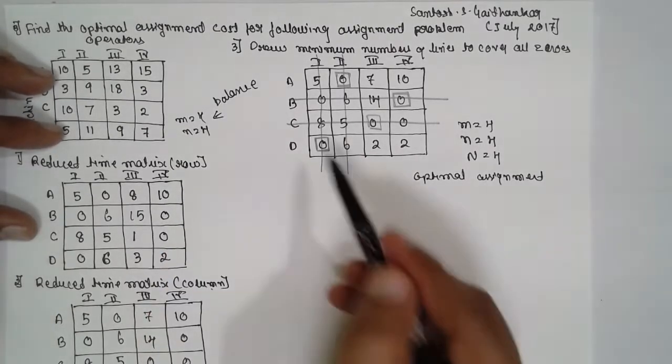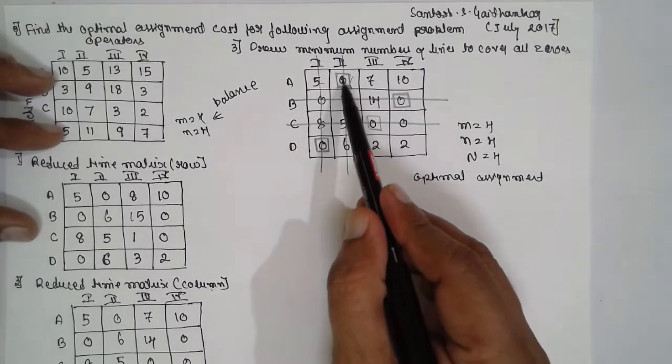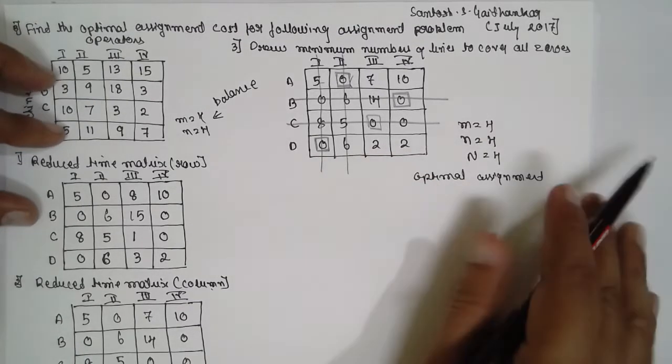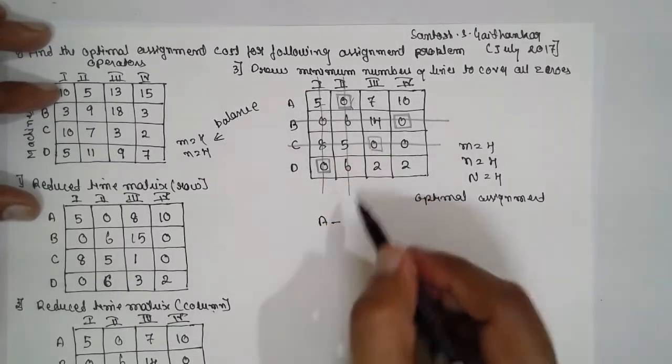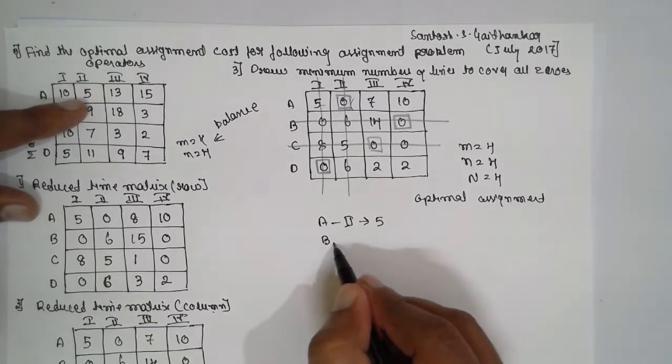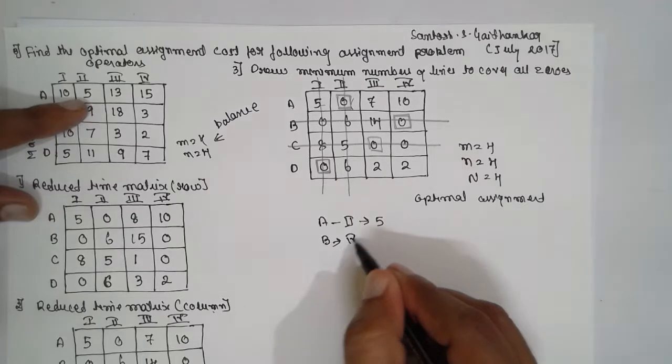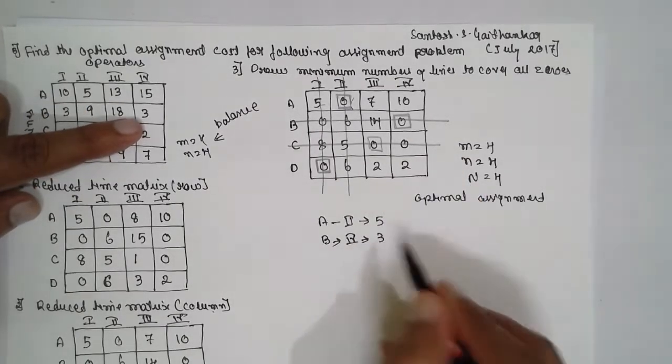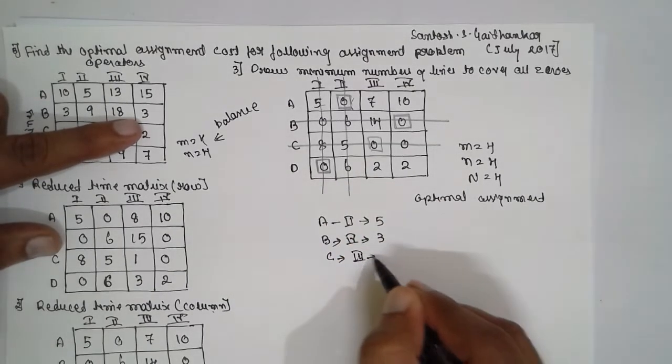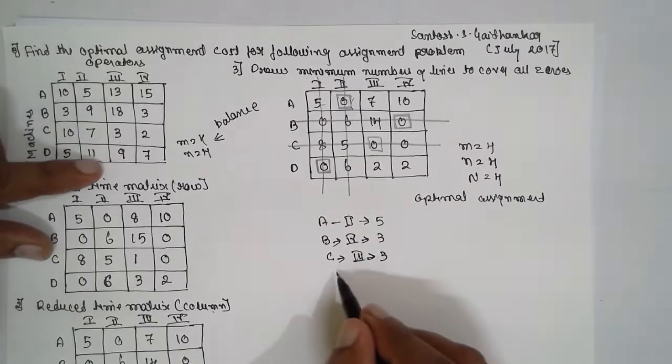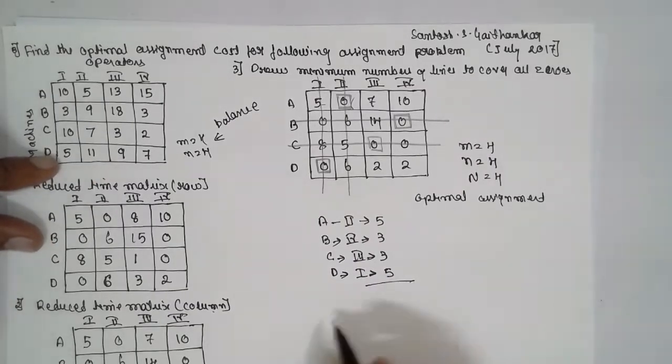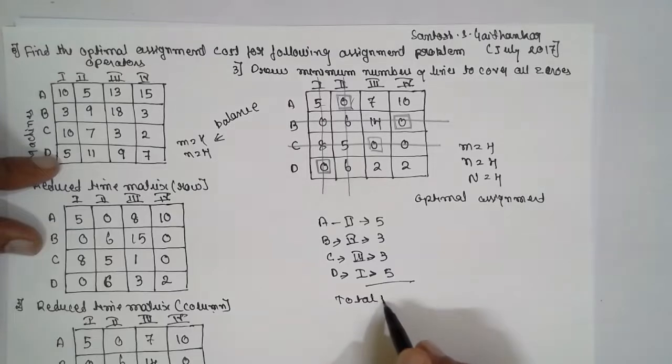Now find out the values here. That means each row contains at least one assignment. See here: first assignment, second assignment, third, and fourth. They are not repeating also. Write the values here. A, A for second, in place of 0, you have to write 5 here. B, the assigned is fourth, the value is 3 here. C, third, the value is 3 here. D, first, the value is 5. If you calculate, the total will be rupees 16.